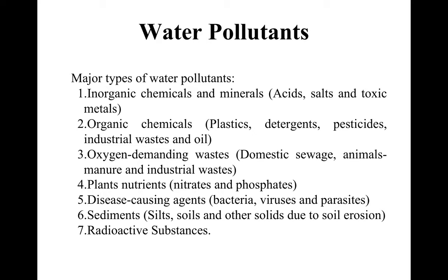Like air pollutants, water pollutants come from various natural and anthropogenic sources. The major water pollutants include: inorganic chemicals and minerals like acids, salts, and toxic metals; organic chemicals like plastics, detergents, pesticides, and industrial waste; oxygen-demanding waste like domestic sewage, animal manure, and industrial waste; plant nutrients like nitrates and phosphates; disease-causing agents like bacteria, viruses, and parasites; sediments from soil erosion; and radioactive substances.